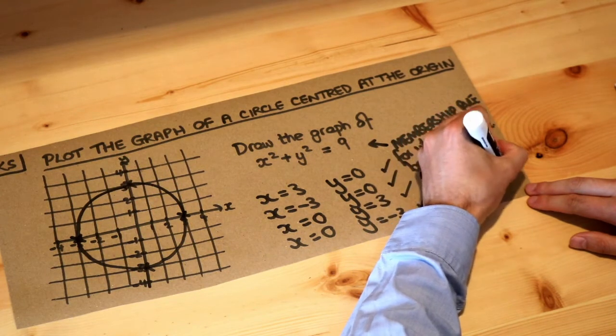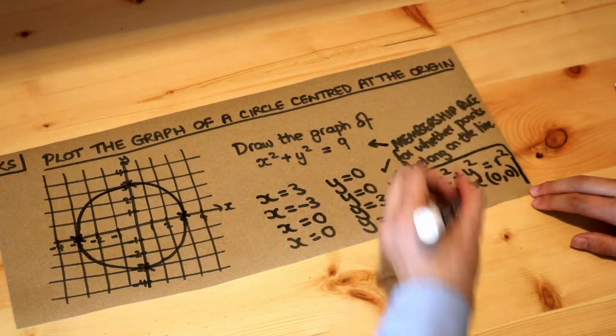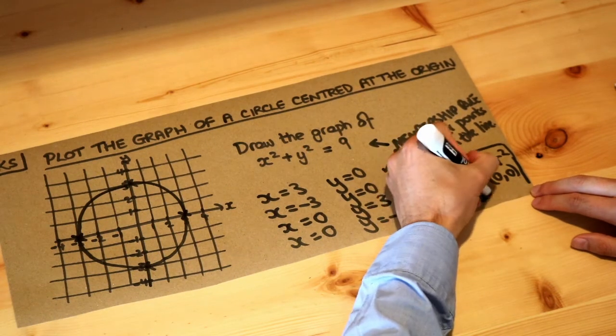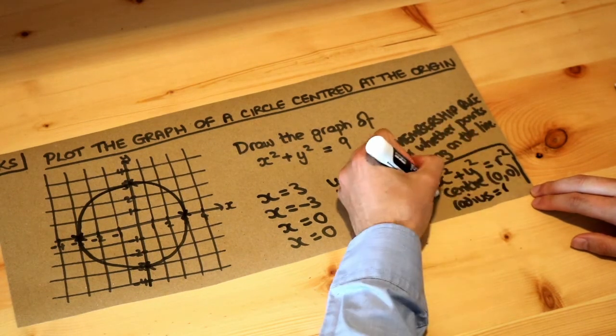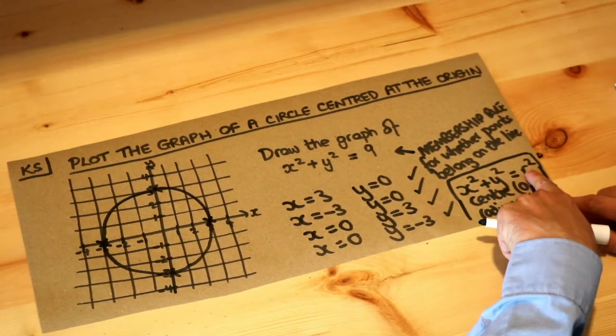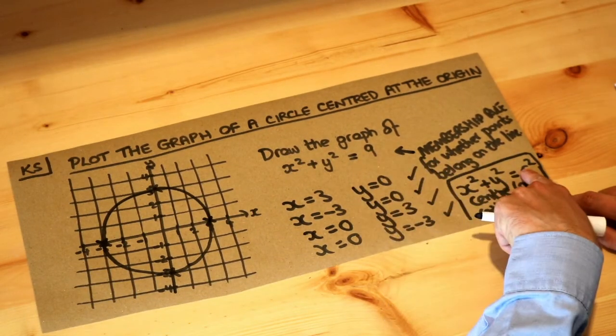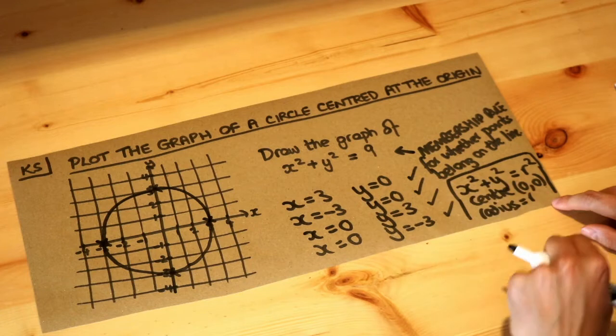would be 0, 0, and the radius of the circle would be r. So whatever the number is on the right-hand side of the equation, the radius squared is that number.